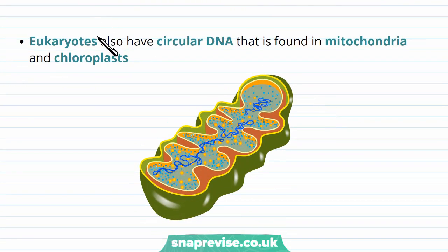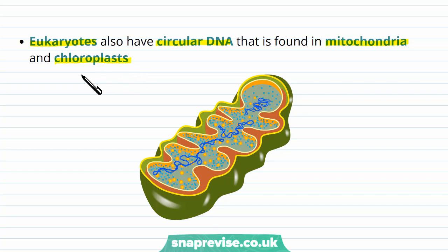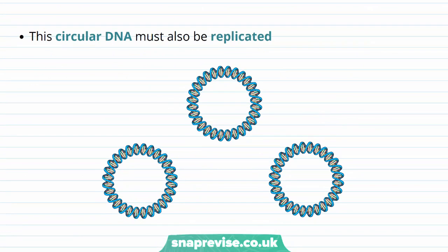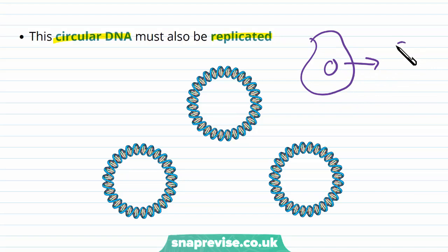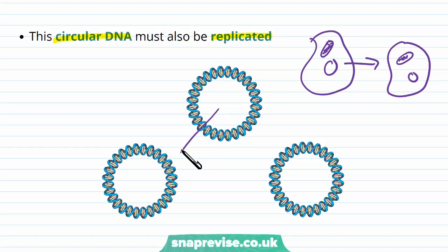Eukaryotes don't only have linear DNA — we also have some circular DNA found in the mitochondria, if you're an animal, and in chloroplasts if you're a plant. Mitochondria are organelles dealing with respiration; chloroplasts are found in plant cells and deal with photosynthesis. The DNA found in these organelles is circular, meaning one end joins up to the other. This circular DNA must also be replicated, because forming new cells requires new mitochondria and chloroplasts with their own copy of DNA.